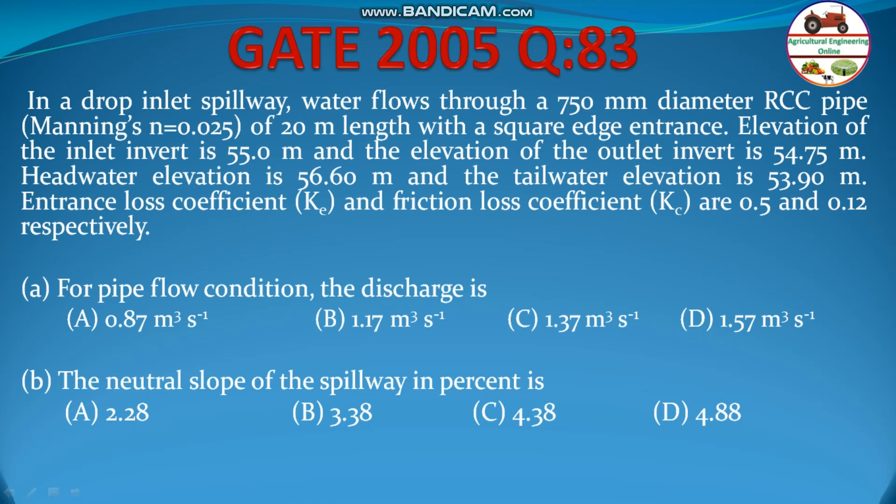In a drop inlet spillway, water flows through a 750 mm diameter RCC pipe, Manning's n = 0.025, of 20 meter length with a square edge entrance. Elevation of the inlet invert is 55 meter and the elevation of the outlet invert is 54.75 meter. Headwater elevation is 56.6 meter and the tailwater elevation is 53.9 meter. Entrance loss coefficient and friction loss coefficient are 0.5 and 0.12 respectively. For pipe flow condition, find the discharge and the neutral slope of the spillway in percentage.